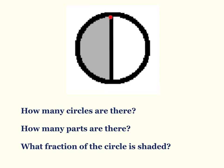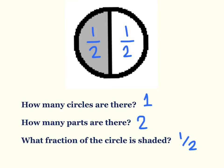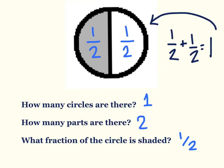Now what fraction of the circle is shaded? We see that we have one half of the circle shaded. Why is that true? Because one half plus one half equals one, which is the amount of circles we have — one is the whole. So this is one half and this is one half, because one divided by two is one half.